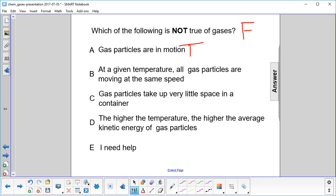At a given temperature, all gas particles are moving at the same speed. No, there is a distribution of speeds. They have an average speed, but the particles are either greater than or less than that. Very few are at the exact average speed. So this here would be false.